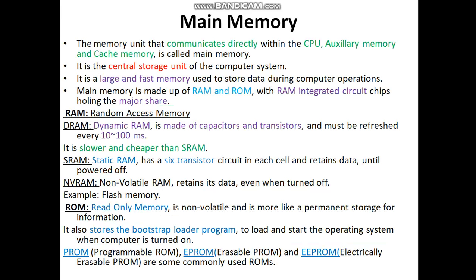RAM can be of three types: DRAM, SRAM, and NVRAM. Dynamic RAM uses capacitors and transistors as its main parts, with a refresh cycle of 10 to 100 milliseconds, and it is slower and cheaper than SRAM. In the case of static RAM, 6 transistors are needed to form a one-bit memory, and the data can be retained until the power is switched off. To overcome the disadvantage that data is retained only when power is on, we go for non-volatile RAM. An example of non-volatile RAM is flash memory, where even if the power gets switched off the data remains in memory.